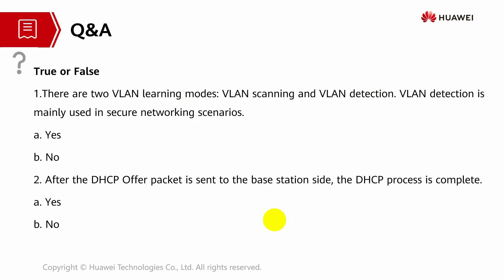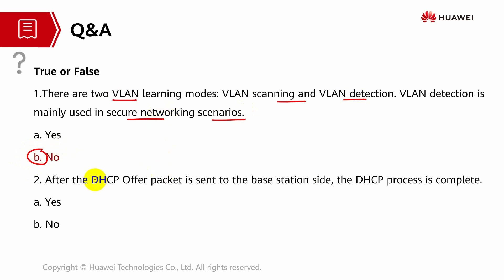Now for two review questions. First: there are two VLAN learning modes - VLAN scanning and detection - and VLAN detection is mainly used in a secure networking scenario. True or false? This is actually false - VLAN detection is used for non-secure networking scenarios. Second: after the DHCP Offer packet is sent to the base station, the DHCP process is complete. True or false? This is also false - there are additional steps after that.